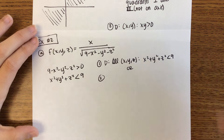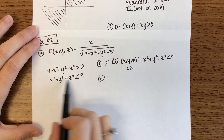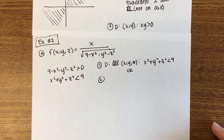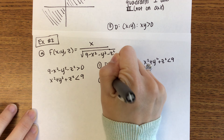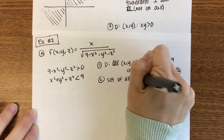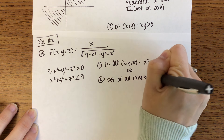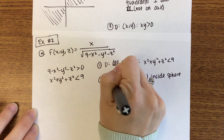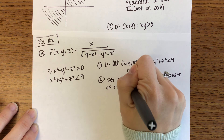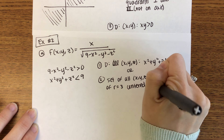The other way to express the domain is in words. If we were to graph x squared plus y squared plus z squared less than 9, it's a sphere — everything inside the sphere with radius 3. So the domain in words is: the set of all (x, y, z) inside the sphere of radius 3 centered at the origin.